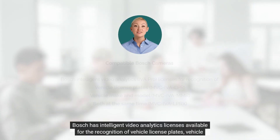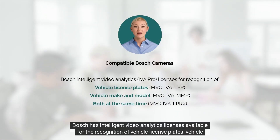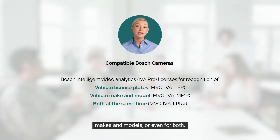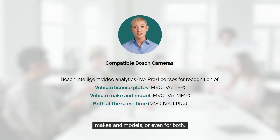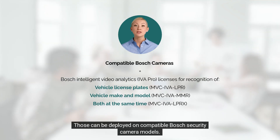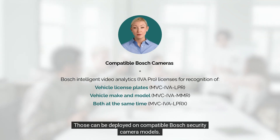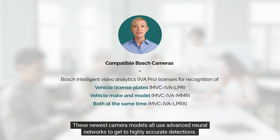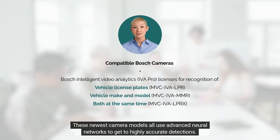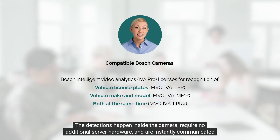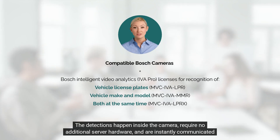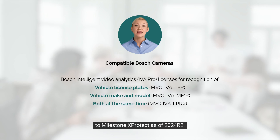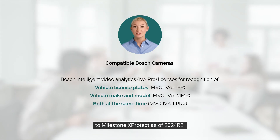Bosch has Intelligent Video Analytics licenses available for the recognition of vehicle license plates, vehicle makes and models, or even for both. Those can be deployed on compatible Bosch security camera models. These newest camera models all use advanced neural networks to get highly accurate detections. The detections happen inside the camera, require no additional server hardware, and are instantly communicated to Milestone XProtect as of 2024 R2.